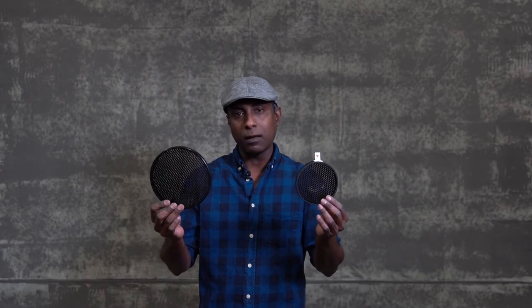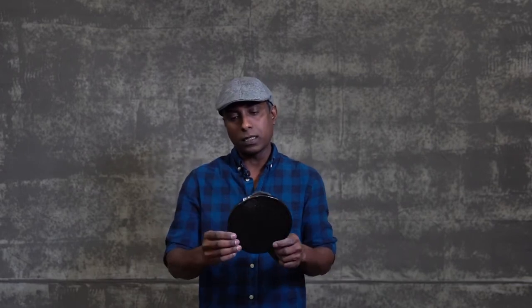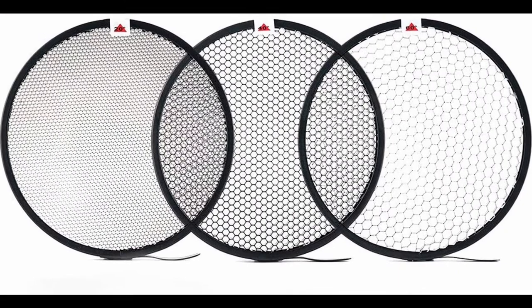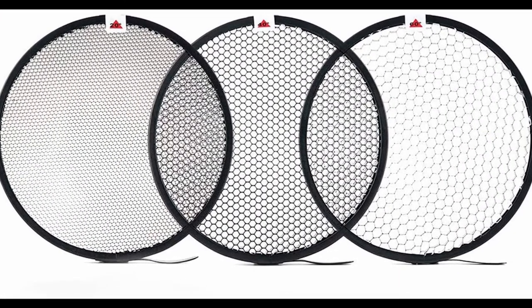I want to talk about 10 degrees, 20 degrees, and 30 degrees of the honeycomb grid for a one-sided photo shoot. You can use a strobe light or a studio light — you can use all the lights. I want to focus on the subject using the honeycomb grid.